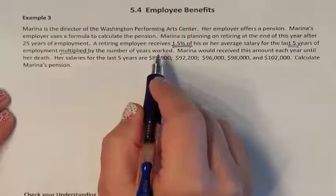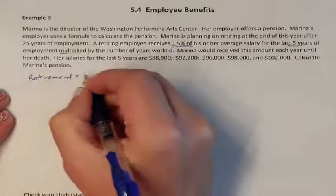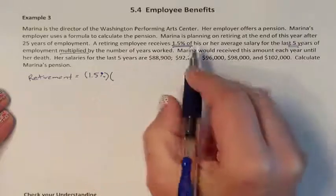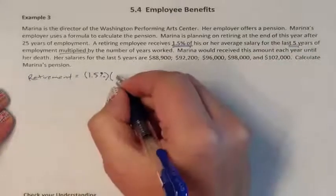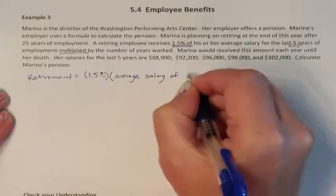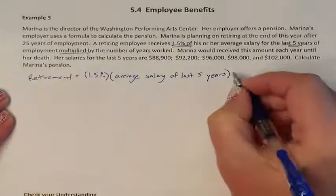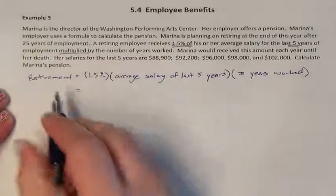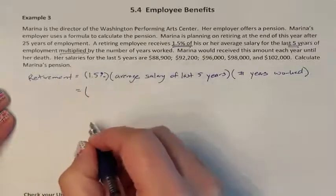So what did that just say? That said, for her retirement, she is going to earn 1.5% of — meaning we're multiplying — her average salary for the last 5 years. And that is multiplied by the number of years worked. So for her retirement, we have 1.5%, which needs to change into a decimal.